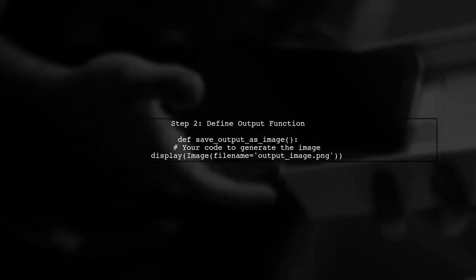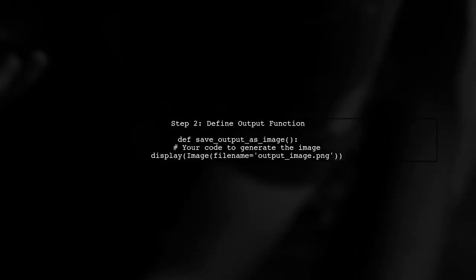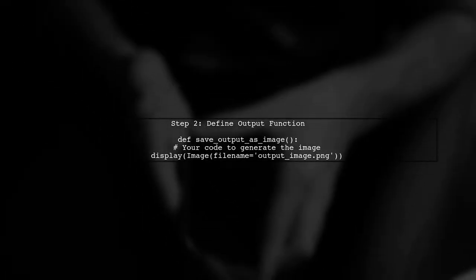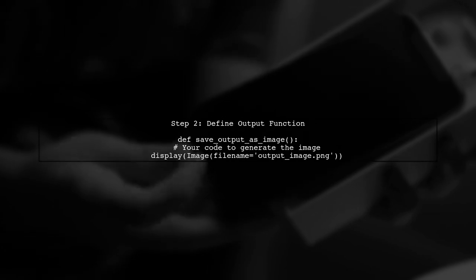To redirect cell output in Jupyter, we can use a combination of IPython's display functions. First, let's import the necessary libraries. Next, we will create a function that captures the output of a cell and saves it as an image file. This allows us to use the image in a separate slide later.